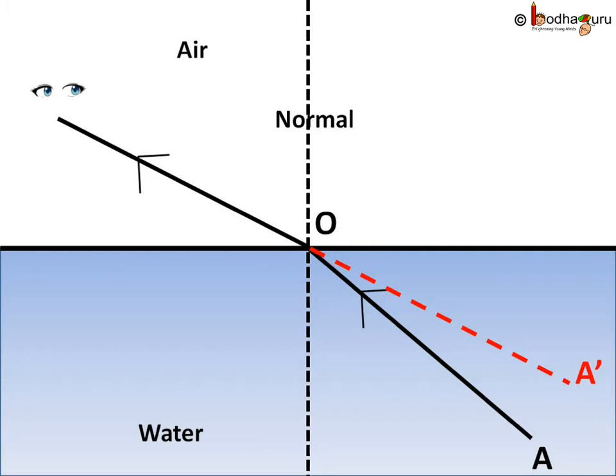Say a light ray is entering medium one to medium two at point O on the plane separating the two mediums. We draw a perpendicular line at point O which is called the normal. Now the speed of light in medium one was V1 and its speed would change to V2 as it enters medium two.